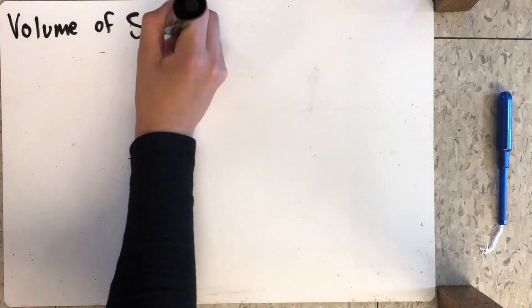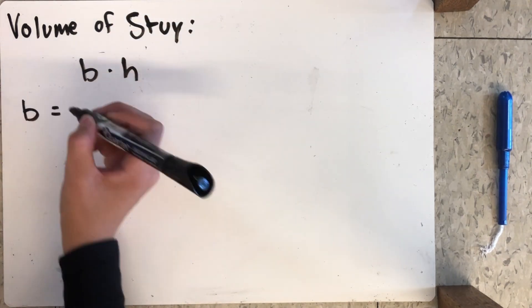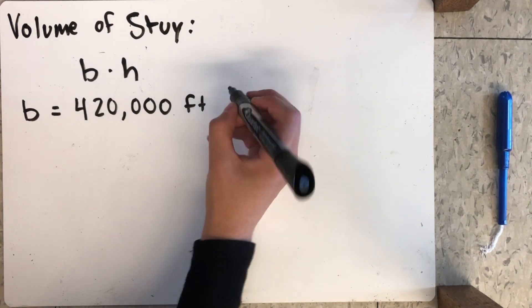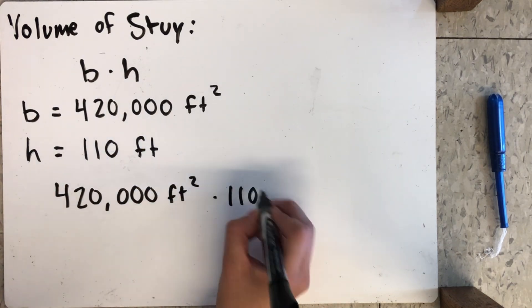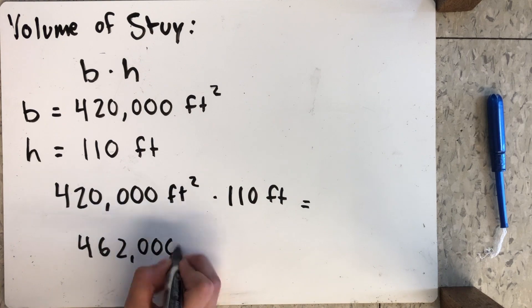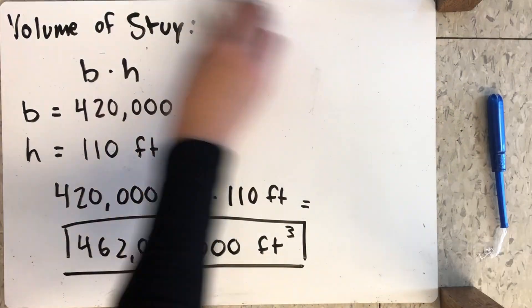We then have to find the volume of Stuy. To do this, we use the base times height formula. The base of Stuy is 420,000 feet squared, and the height is 110 feet. We multiplied these to find the total volume and got 462 million feet cubed.